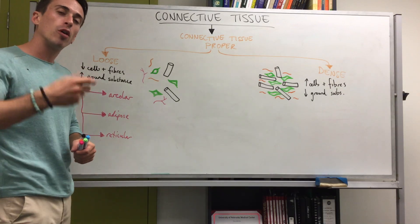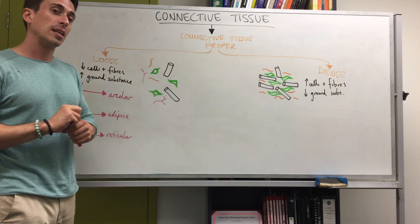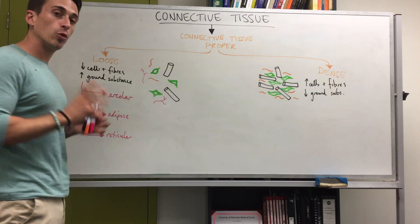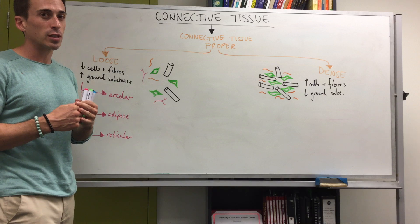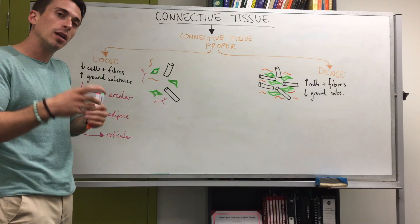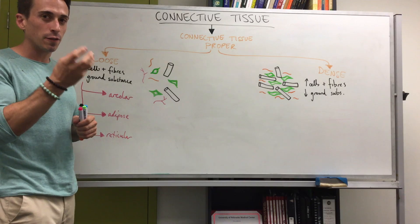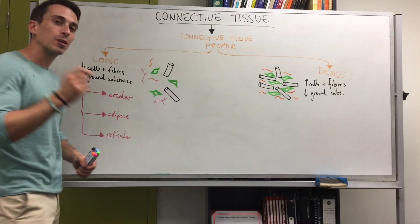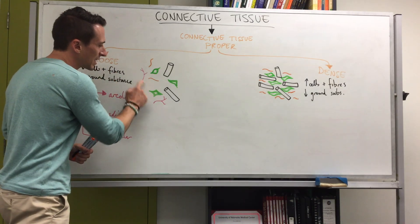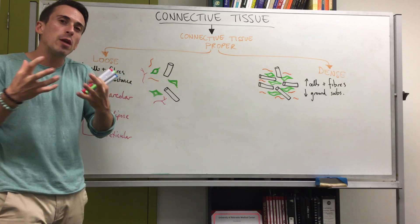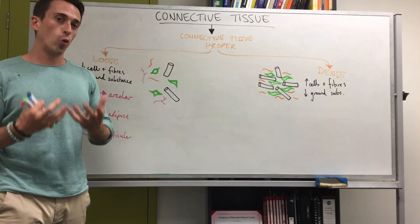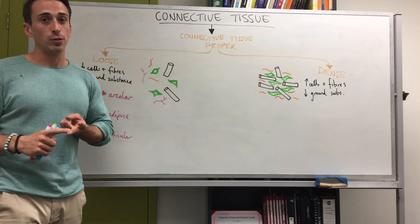Adipose tissue is made up of the cell type adipocytes — fat cells — so it's basically fatty tissue. You'll find it in the subcutaneous region underlying the epidermis, and it also surrounds organs, predominantly providing cushioning and energy storage from the fat within those cells. Reticular connective tissue is made up predominantly of reticular fibers that form a framework or meshwork, making up mainly the immune or lymphatic organs such as the spleen and lymph nodes.